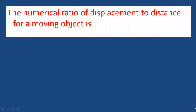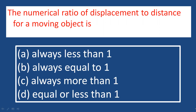The numerical ratio of displacement to distance for a moving object is what? One of the major differences between distance and displacement is that displacement divided by distance is equal to less than one.